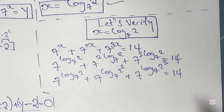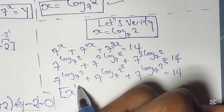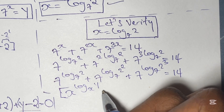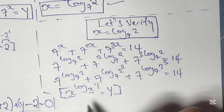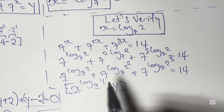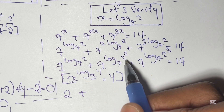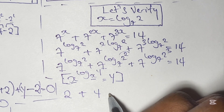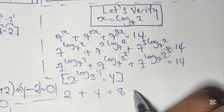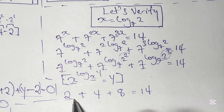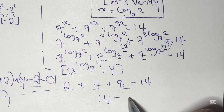This must evaluate to 14. Using the rule that x to the power of log base x of y equals y — since the bases match — each term simplifies: 7 to the power of log base 7 of 2 equals 2, so we get 2 plus 2 squared plus 2 cubed. That's 2 plus 4 plus 8. Is that equal to 14? Yes — 2 plus 4 is 6, and 6 plus 8 is 14. Our solution is verified: x equals log base 7 of 2.